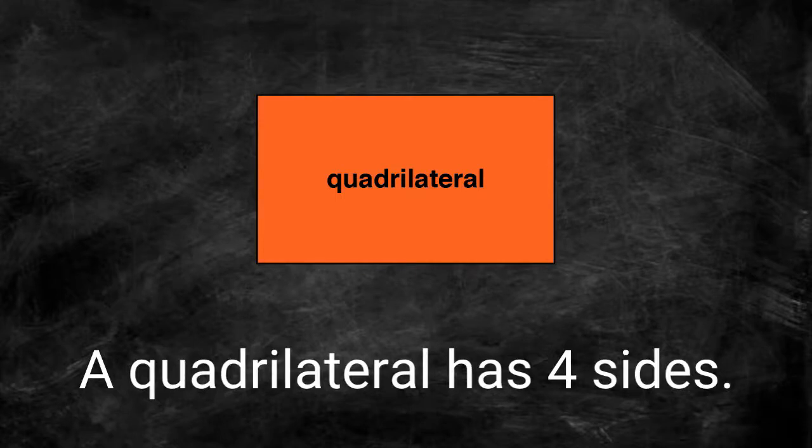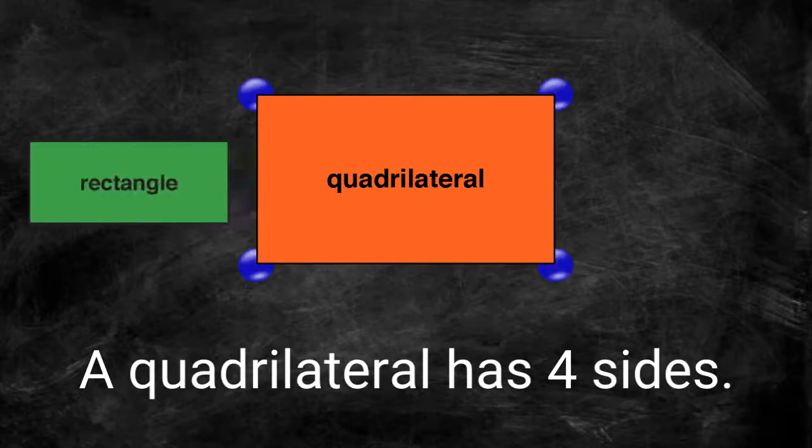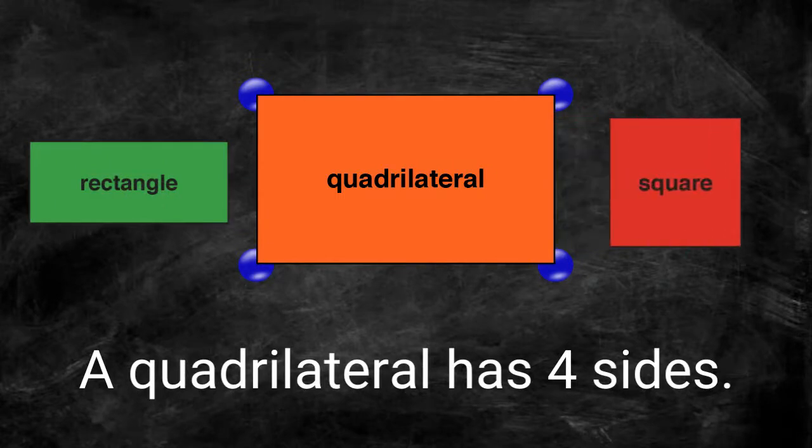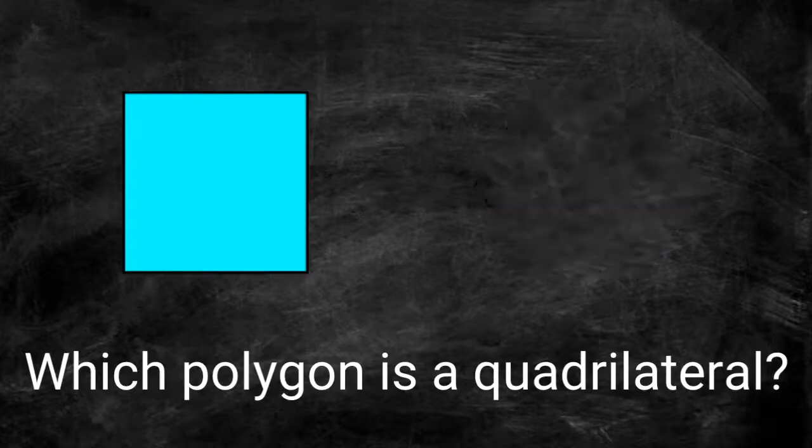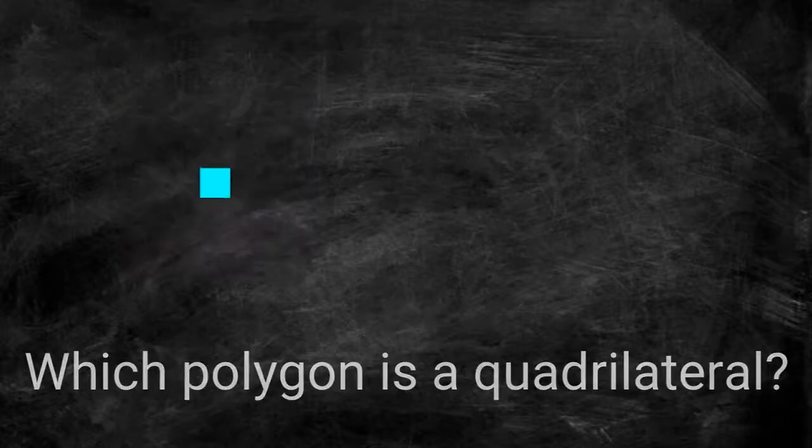A quadrilateral is a polygon with four sides and four vertices. Which polygon is a quadrilateral? This polygon has four sides and four vertices. This is a quadrilateral.